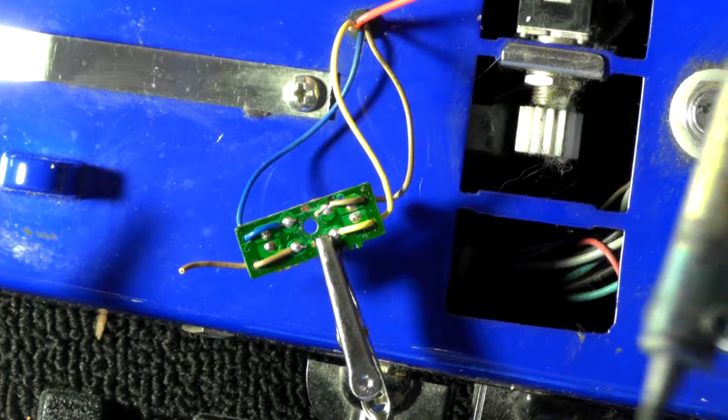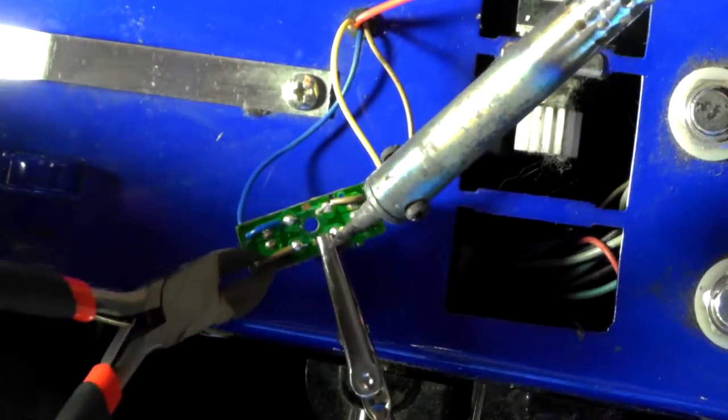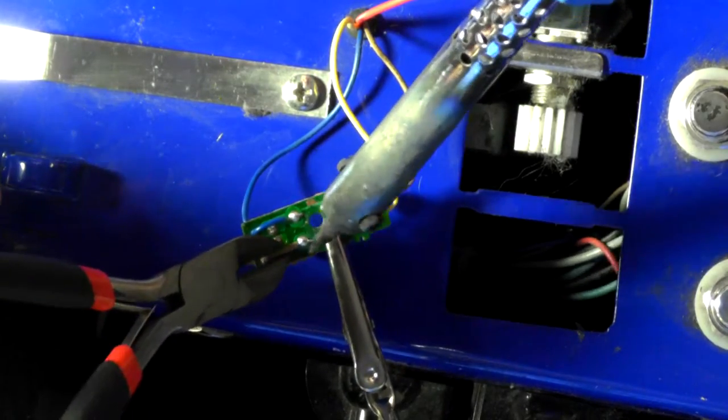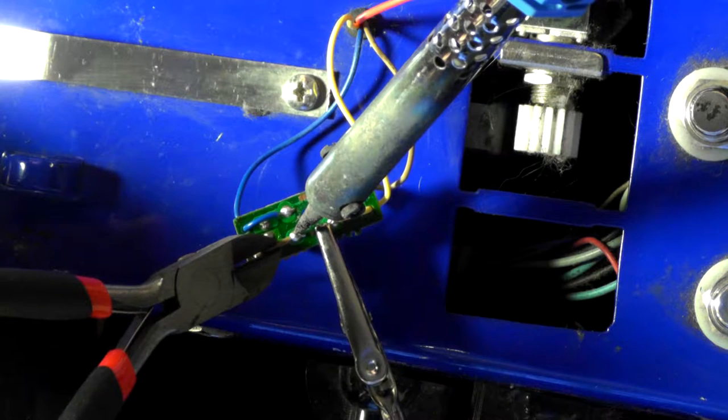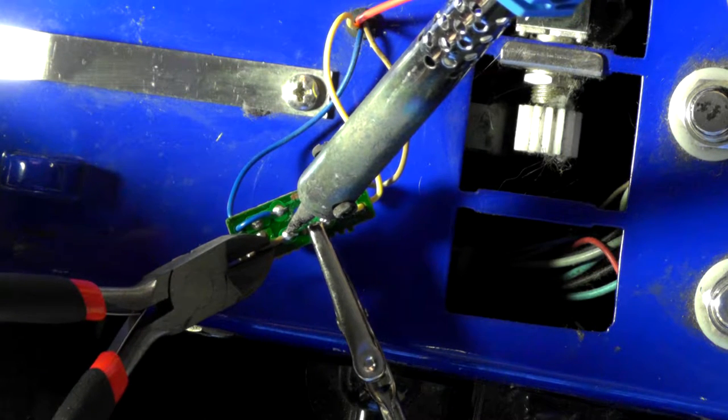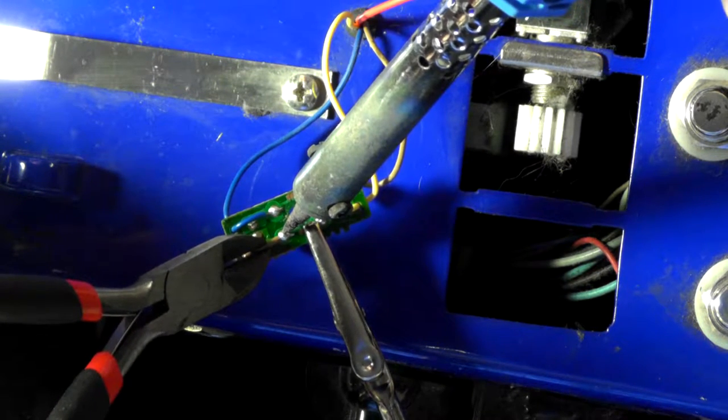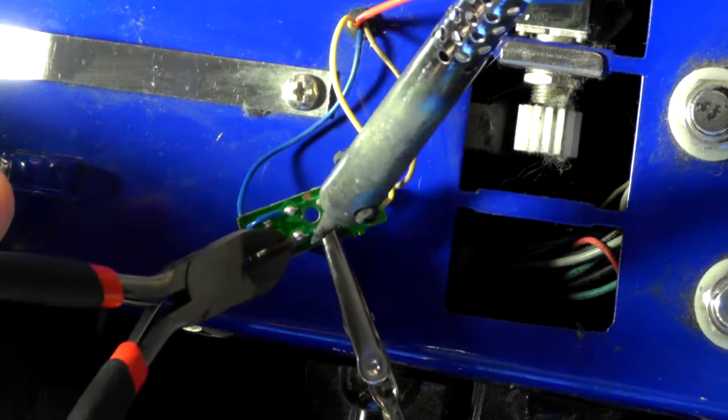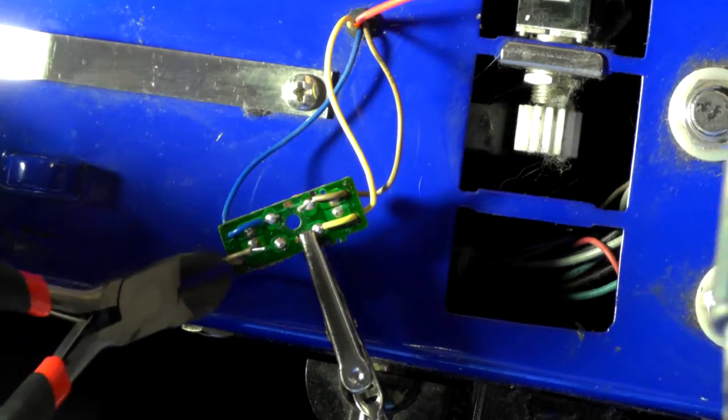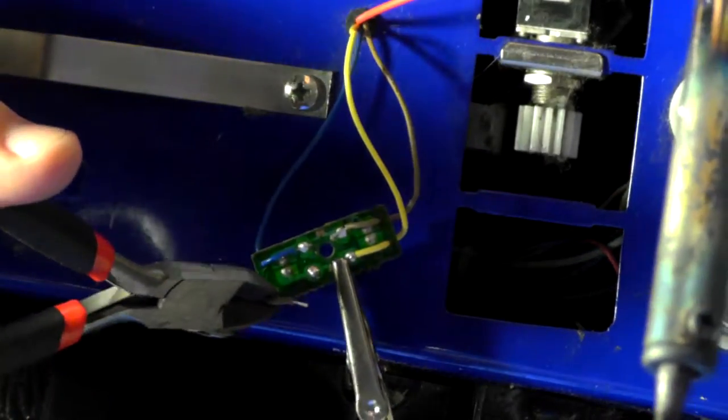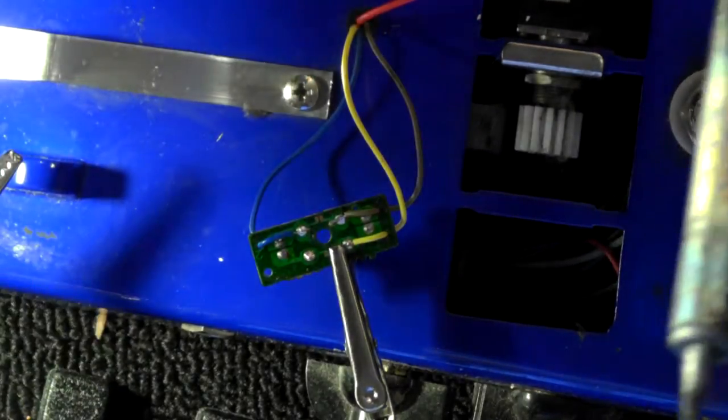Got my soldering iron again. Hold on to the wire, slightly gently pull. Got that guy off. And we got the wire out.